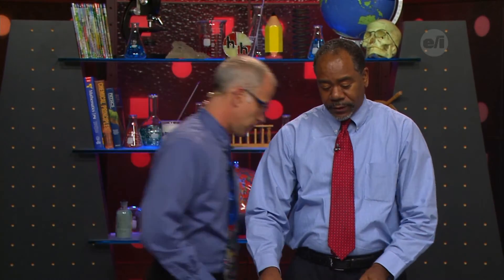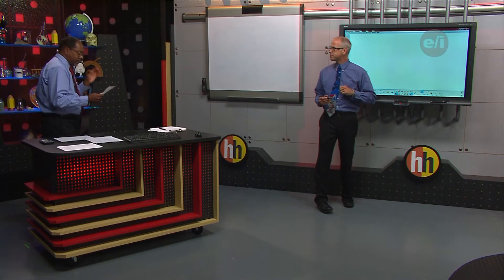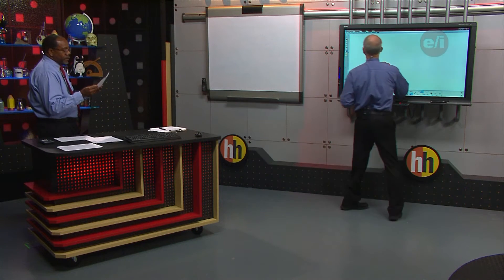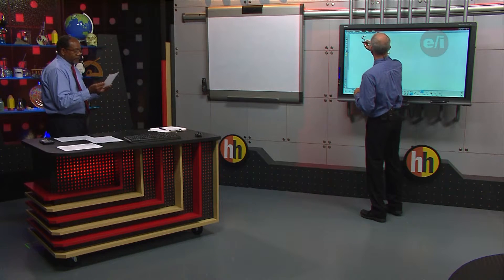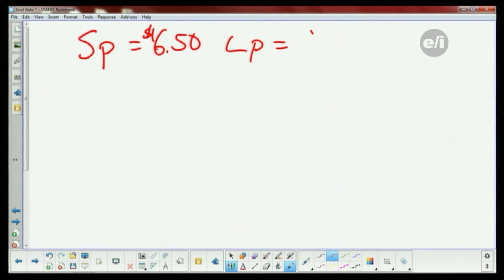We have a question that was called in. I'm gonna go over to the board. Can you read it for me, Sam? Okay, this is a ninth grade question. It says small pillows cost six dollars and fifty cents — I'm gonna write small pillow equals six dollars and fifty cents. Large pillows cost nine dollars — equals nine dollars.